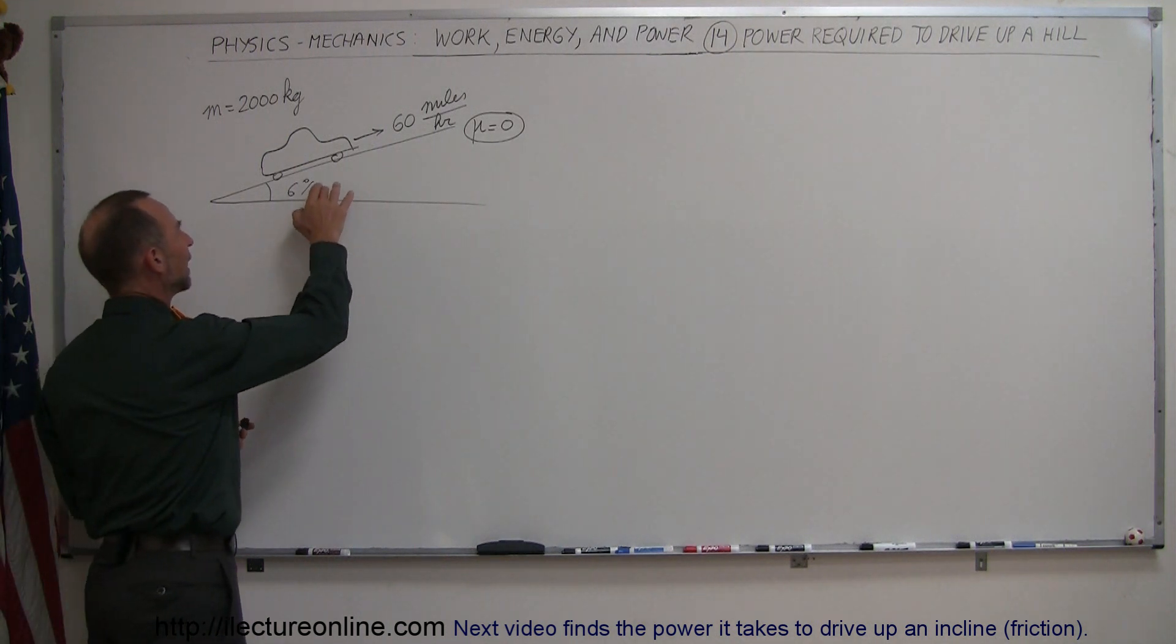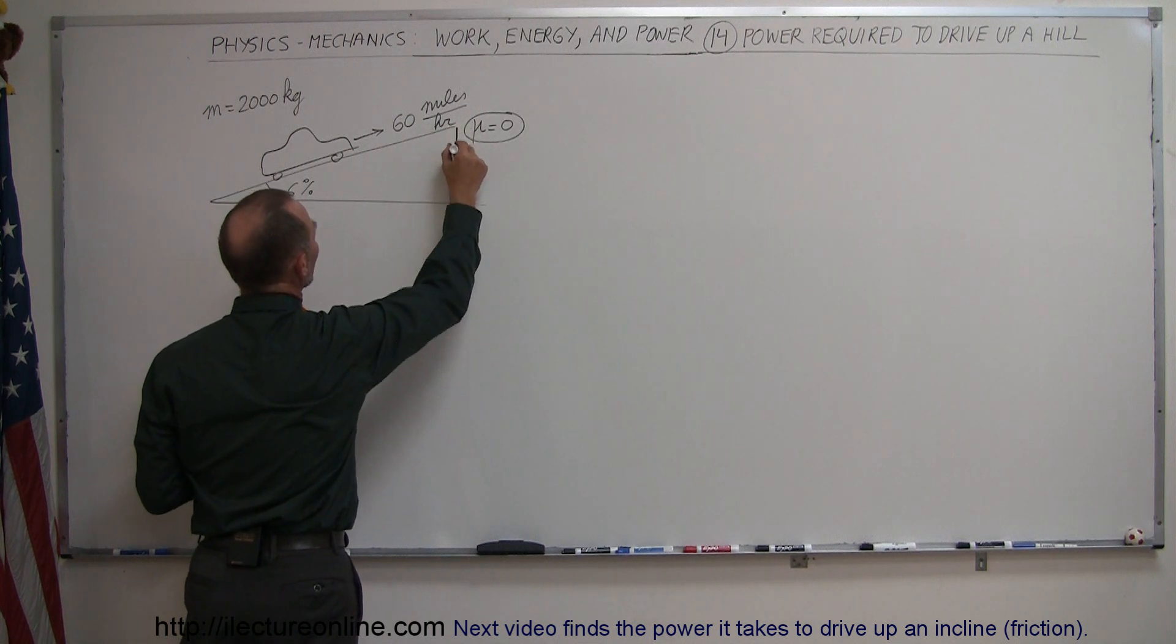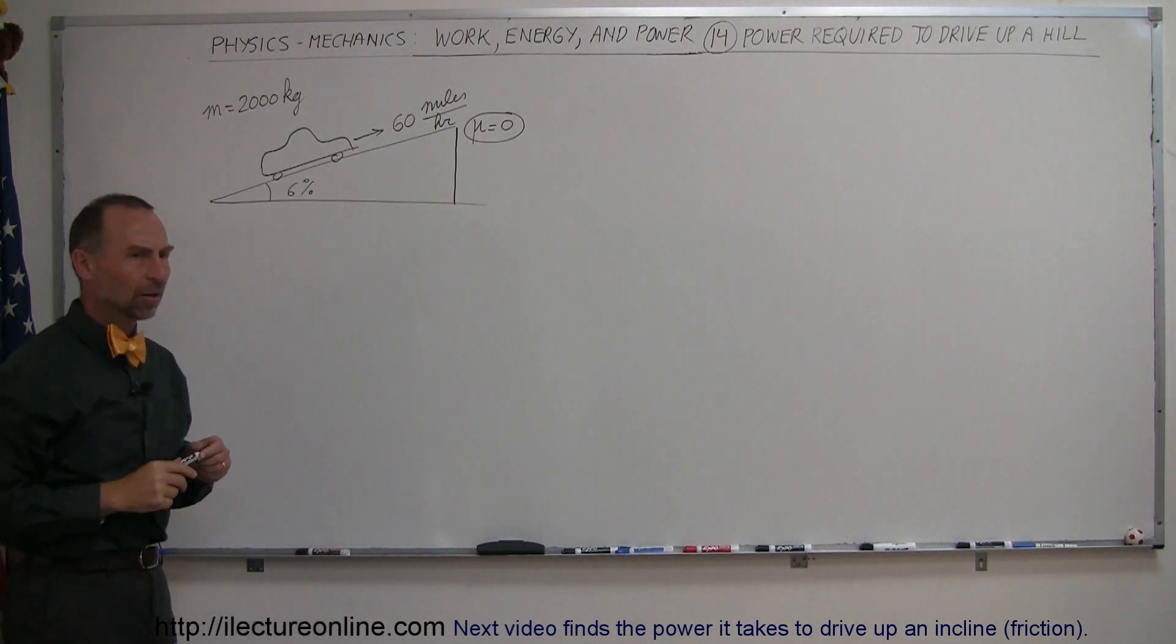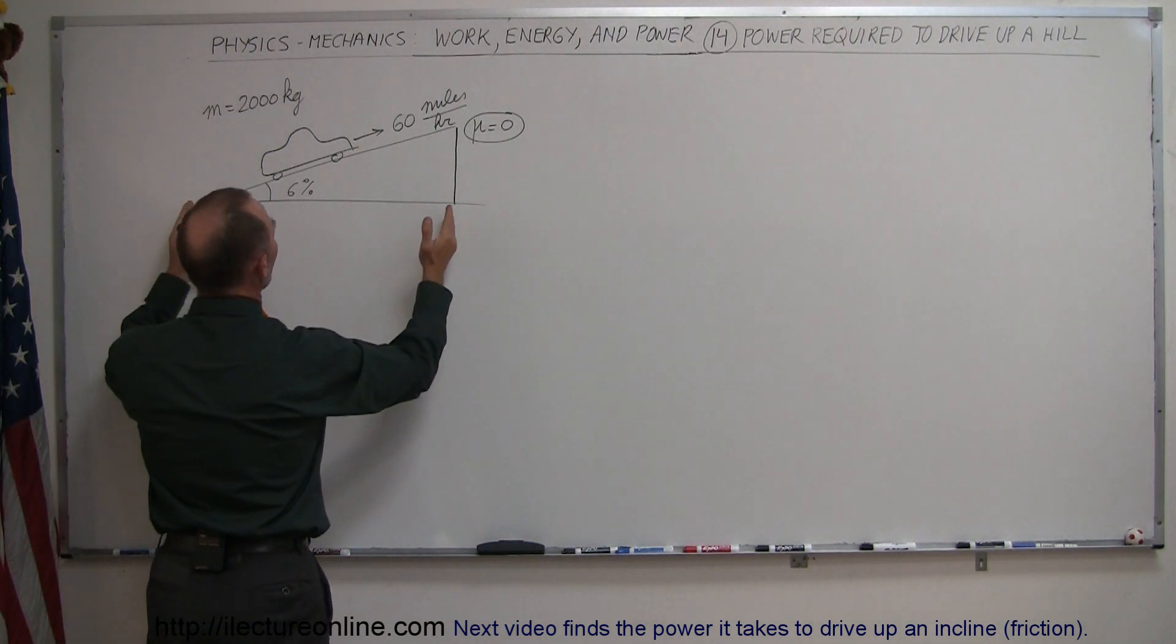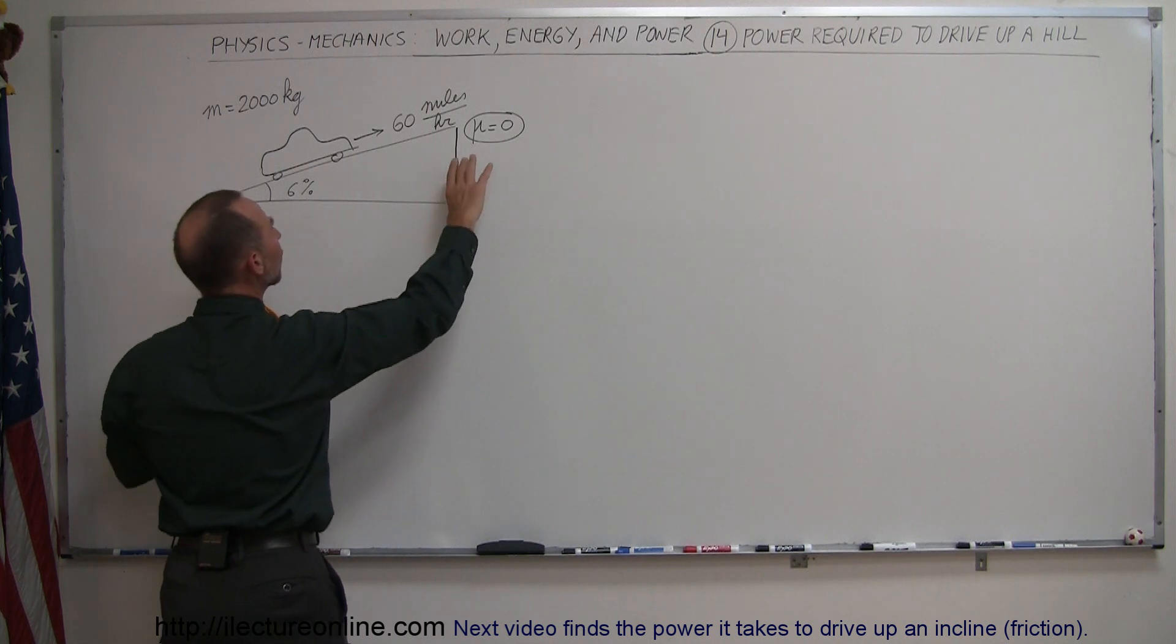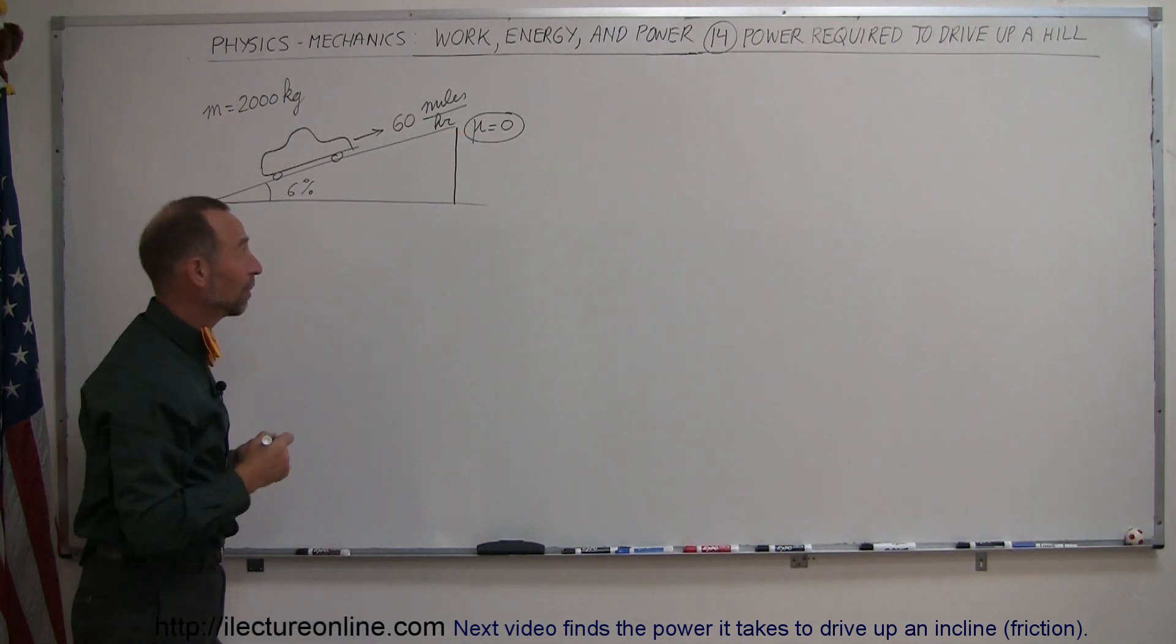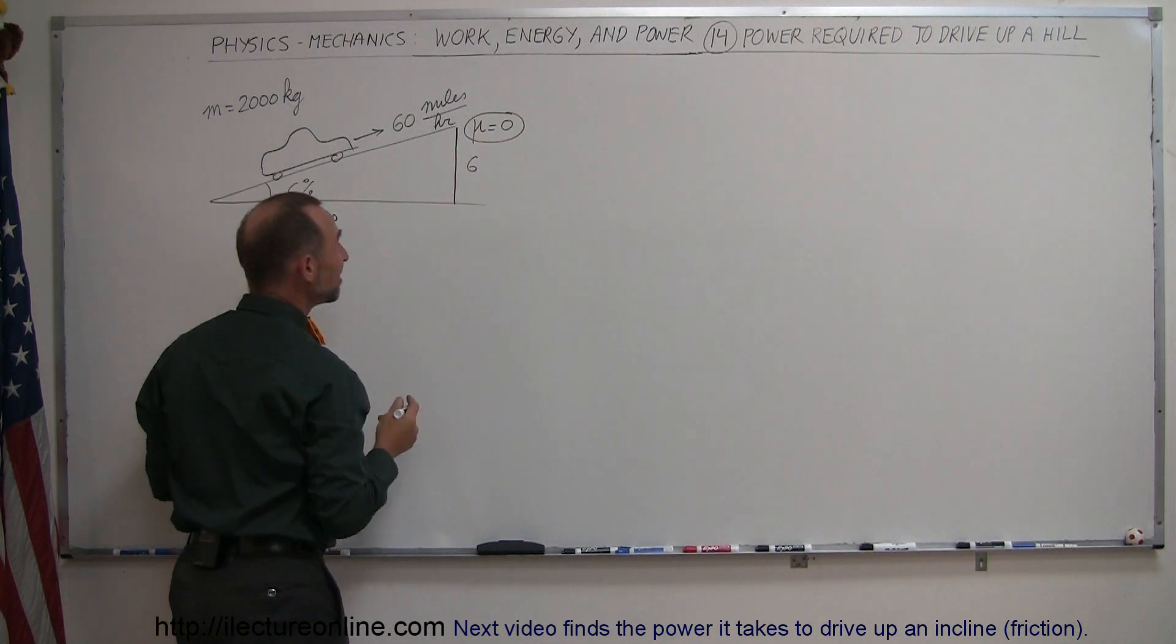So how do we go about doing that? First of all, I think I want to go ahead and turn this into an angle. So when we talk about the road having a steepness of 6%, that means for every 100 feet that you drive along the horizontal axis, the road will go up by 6%.